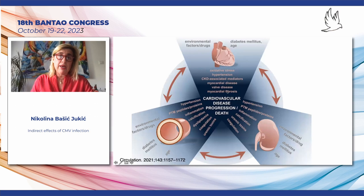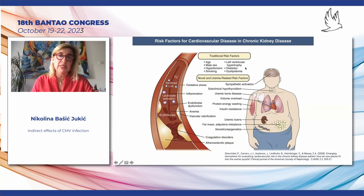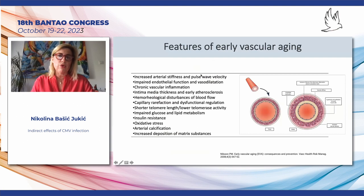Progression of cardiovascular disease and death depends on heart, blood vessels, and kidney function. They are all interrelated and they form vicious circles. It is very hard to stop any component of this vicious circle. The risk for cardiovascular disease in chronic kidney disease is well known, and besides traditional risk factors, there are many uremia-related risk factors. Most of them can be attributed to vascular changes and vascular aging.